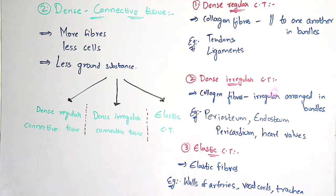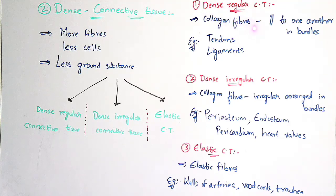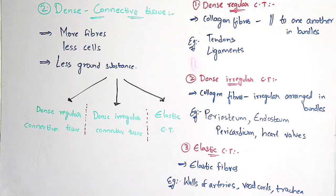In dense irregular connective tissue, it also consists of collagen fibers, but the collagen fibers are irregularly arranged — unlike dense regular connective tissue where they are arranged parallelly. The best examples are periosteum, endosteum, pericardium, and heart valves.